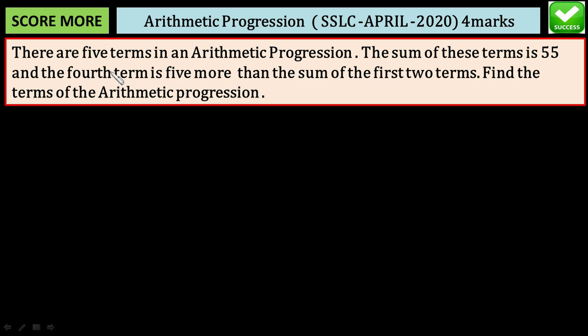According to the question, there are 5 terms in an arithmetic progression. Let the 5 terms of the AP be a, a+d, a+2d, a+3d, a+4d. These are 5 terms.